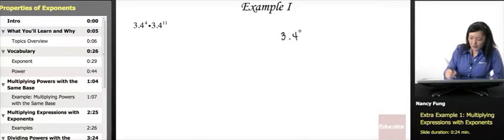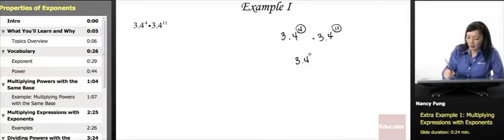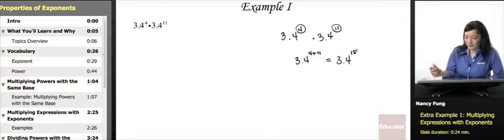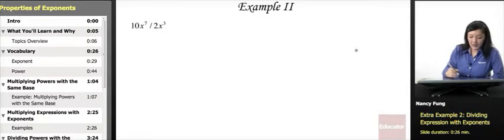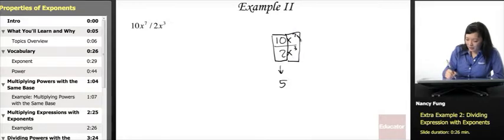We have a base of 3.4 to the 4th times 3.4 to the 11th. When multiplying powers, keep the same base — do not multiply the base — and add the exponents: 4 plus 11 gives 3.4 to the 15th. Next, 10x to the 7th over 2x to the 3rd: separate the numbers from the powers. 10 divided by 2 is 5, and subtracting the exponents, 7 minus 3 gives x to the 4th. The answer is 5x to the 4th.